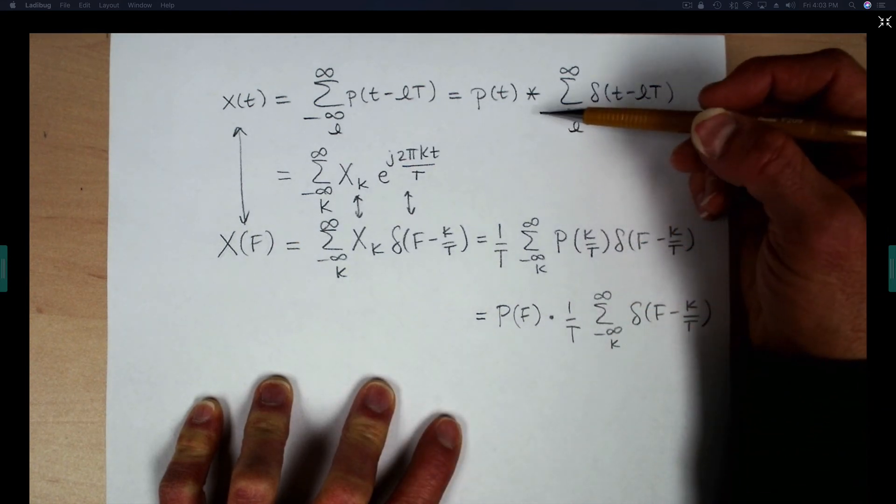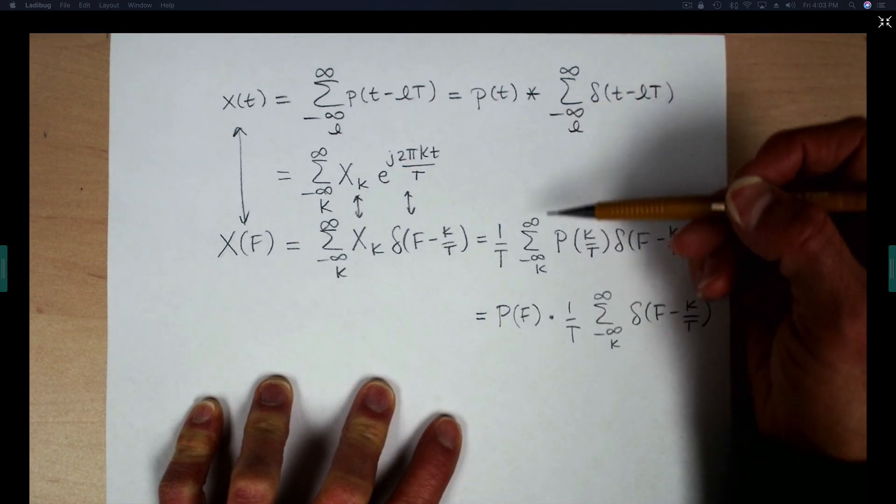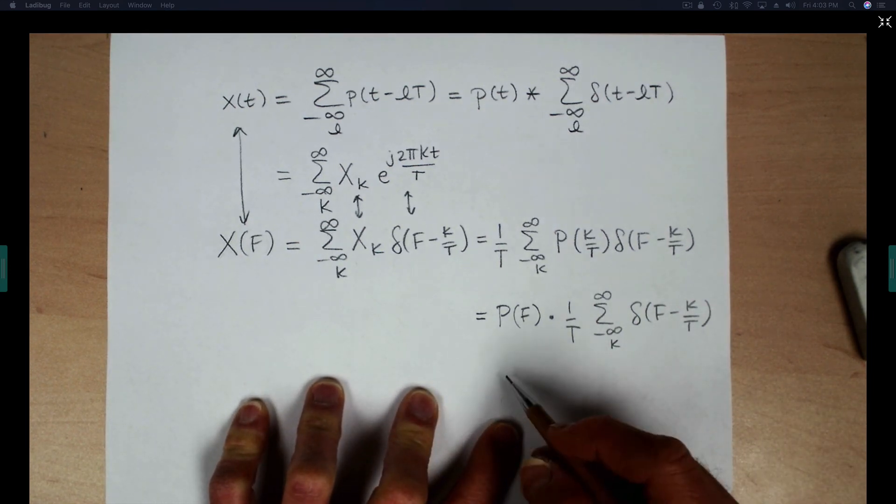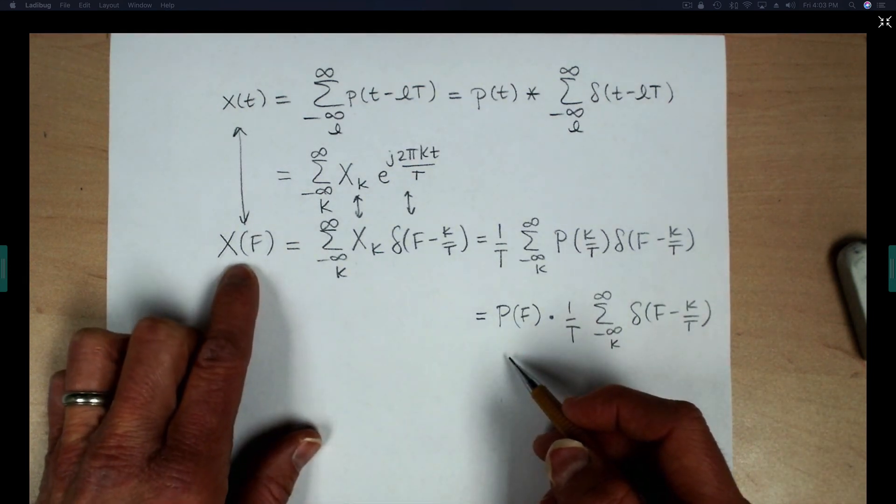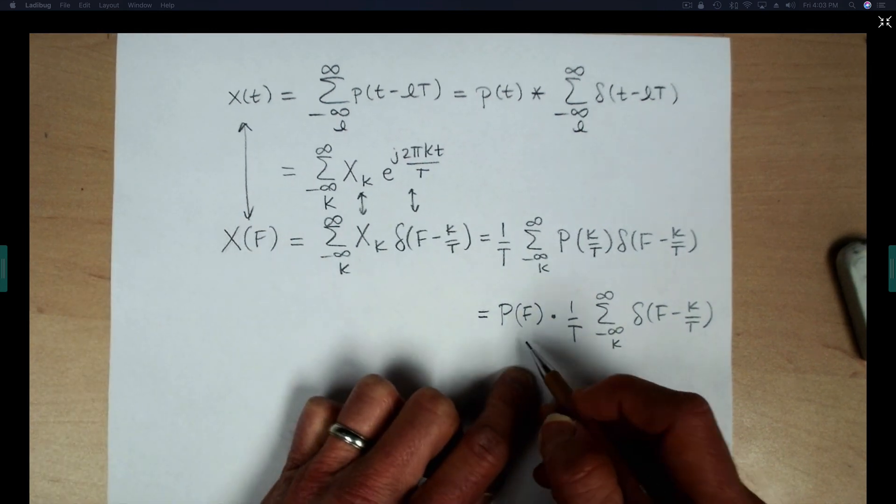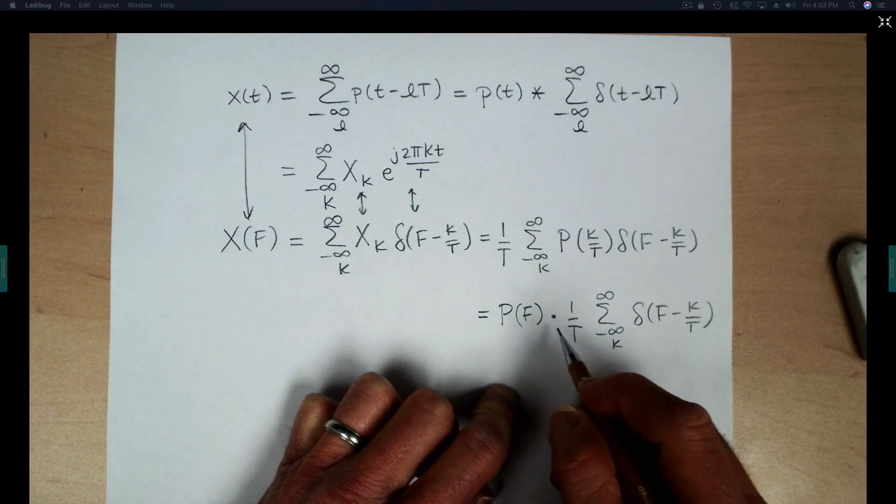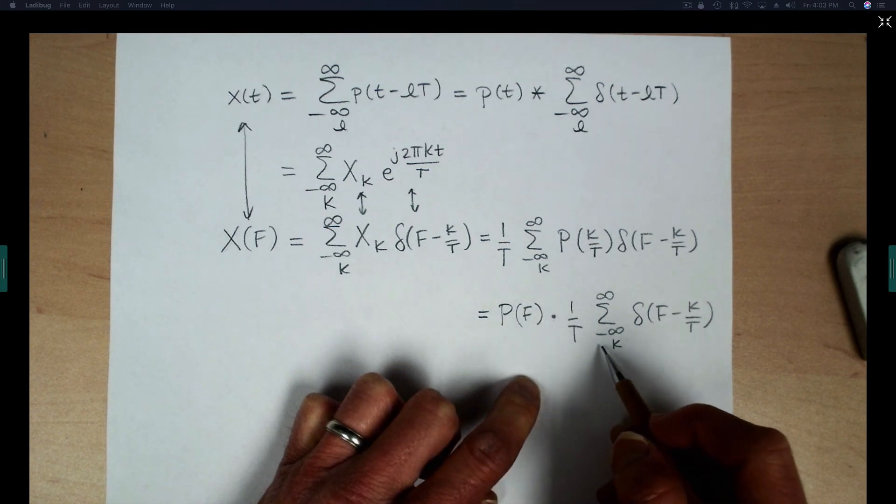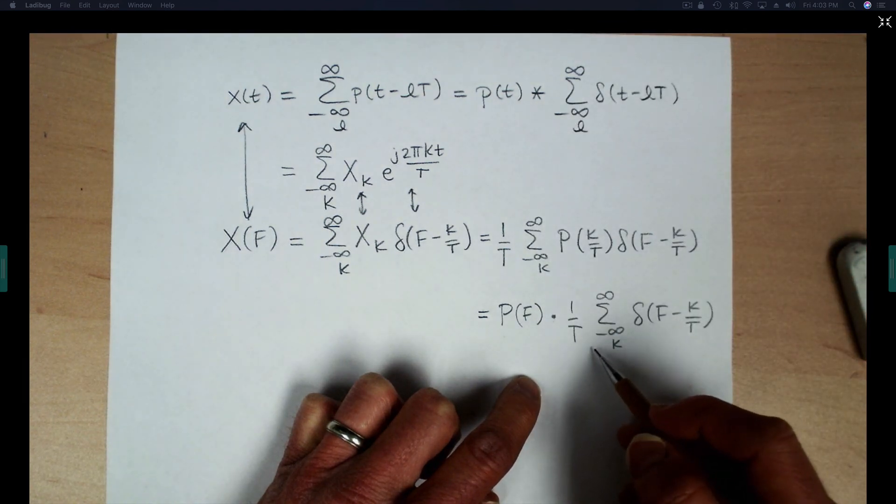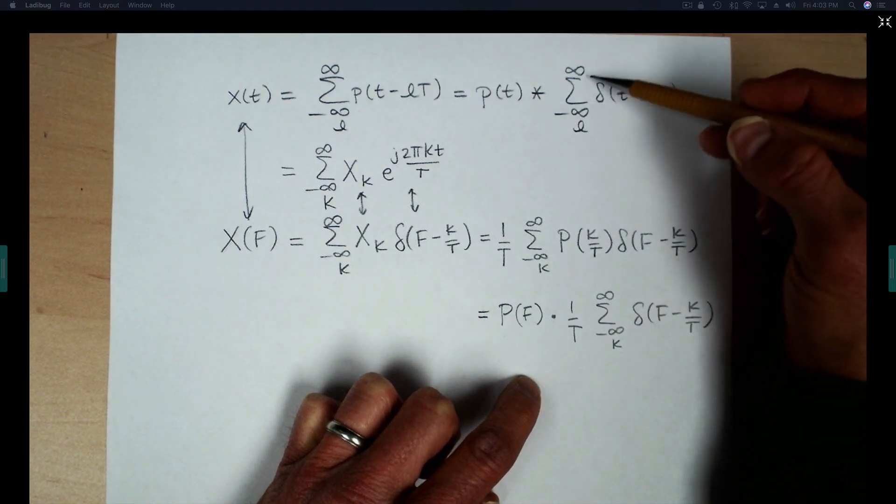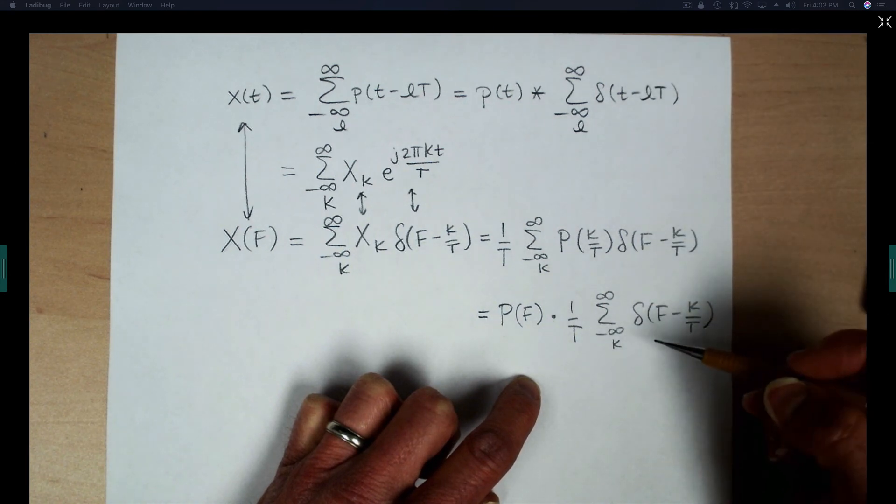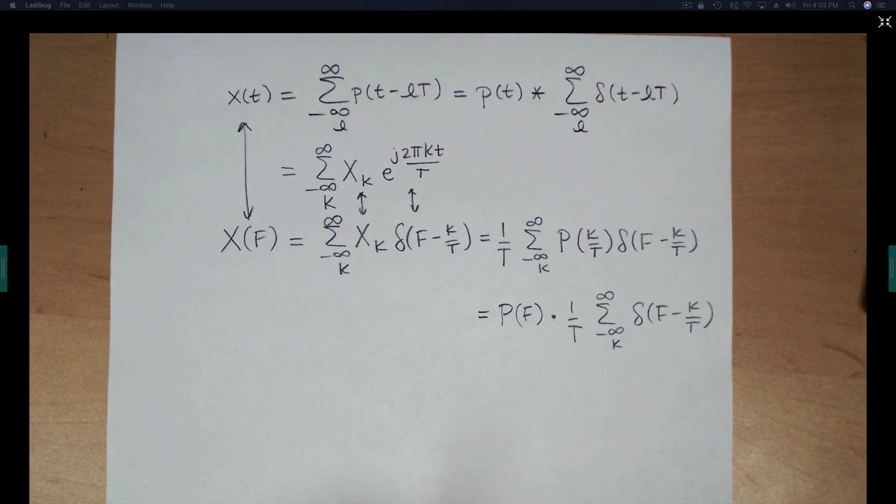And we know that convolution in the time domain corresponds to multiplication in the frequency domain and we see that appearing directly here because the Fourier transform of our periodic signal X of T is X of F and we see that that is equal to the Fourier transform of the basic pulse times the Fourier transform of a pulse train. So it must be that the Fourier transform of the basic impulse train is another impulse train. And we've seen that also in another video.